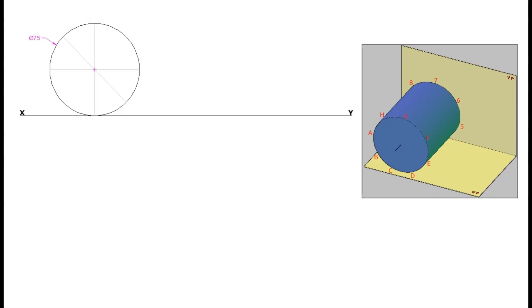Divide the circle into 8 equal parts and name these points as 1, 2, 3, 4, 5, 6, 7, 8. The cylinder has two bases, one at the front and one at the back. The divisional points of the front base can be named as A dash, B dash, C dash, D dash, E dash, F dash, G dash, and H dash.